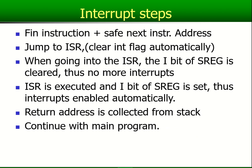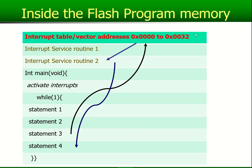The interrupt steps work as follows. The interrupt vector table or vector addresses run from 0x0000 up to a maximum of 0x0032, and this sits right at the top of your Flash program memory. As we've seen, a specific vector address is actually only four bytes long, so in those four bytes you cannot really write a big program.